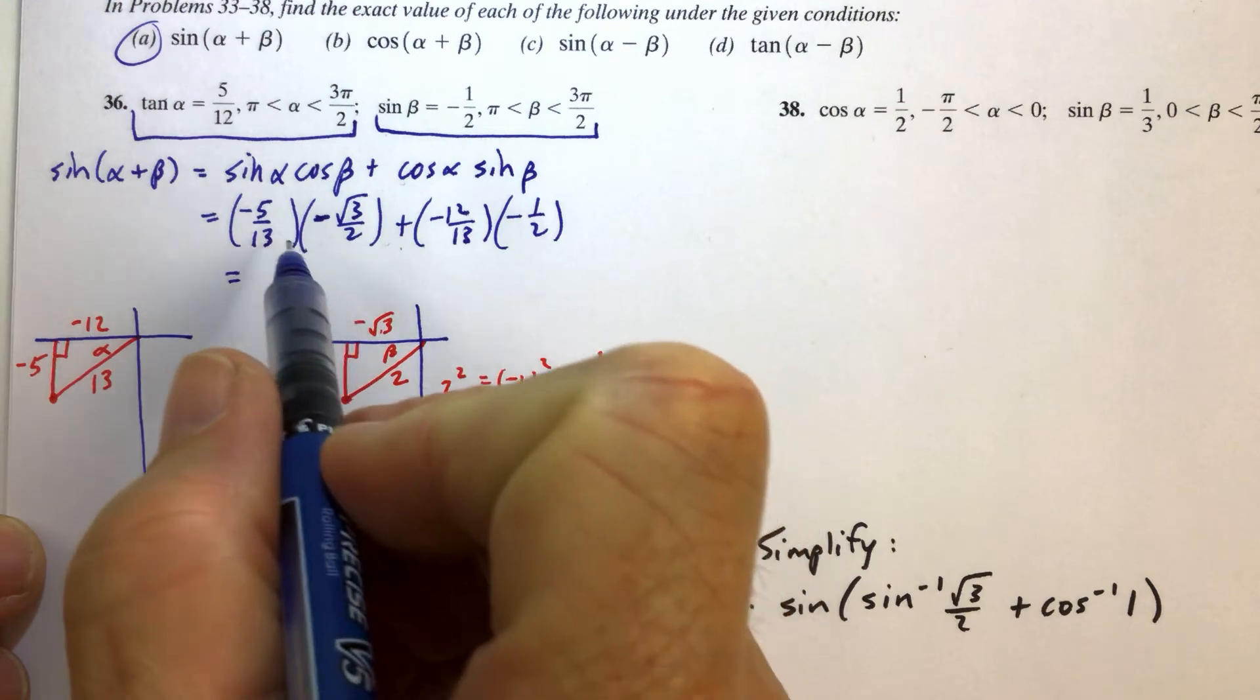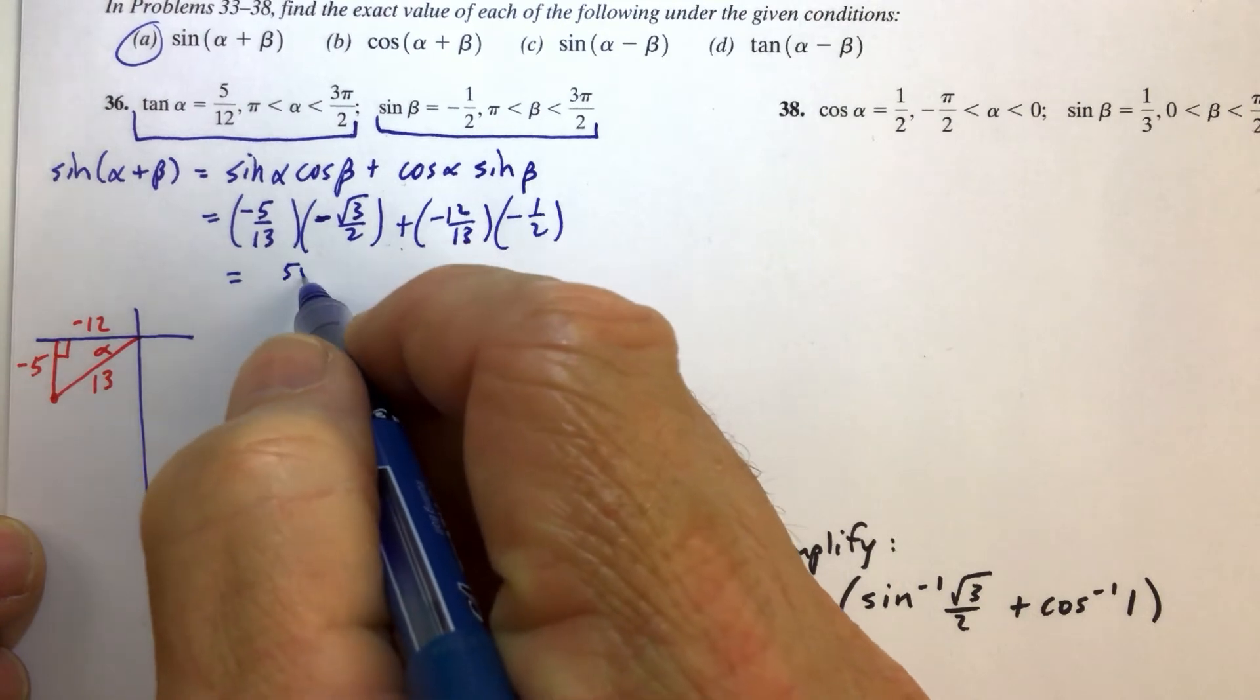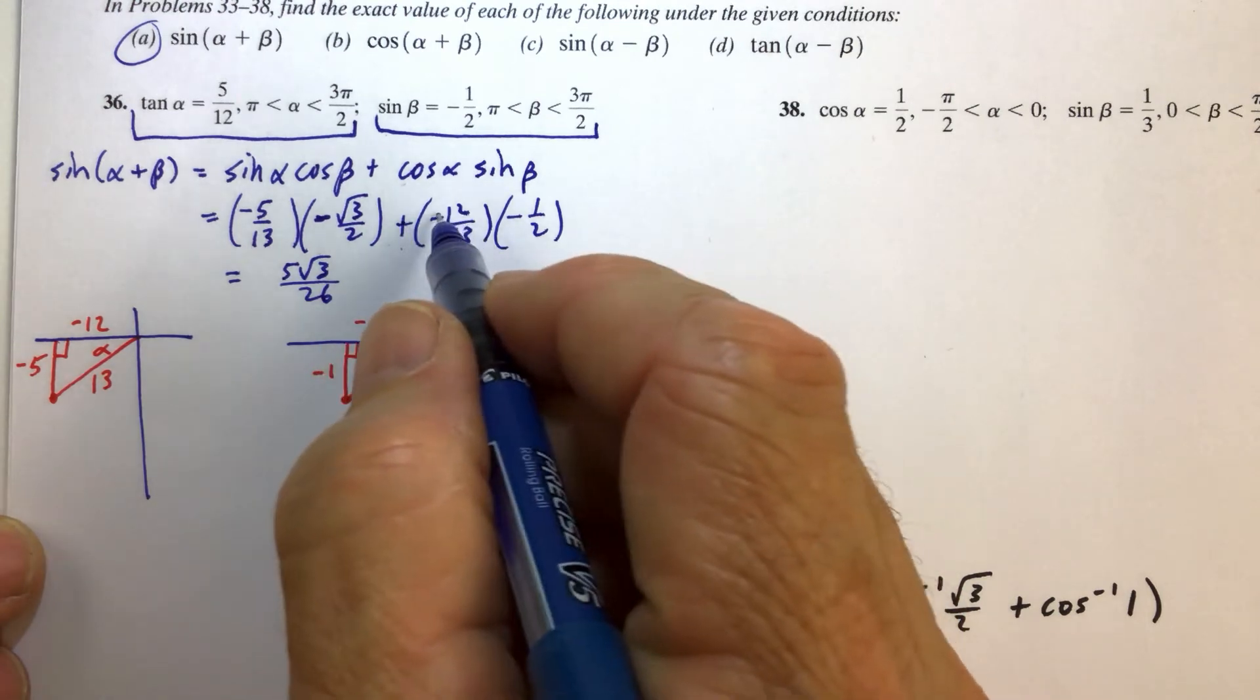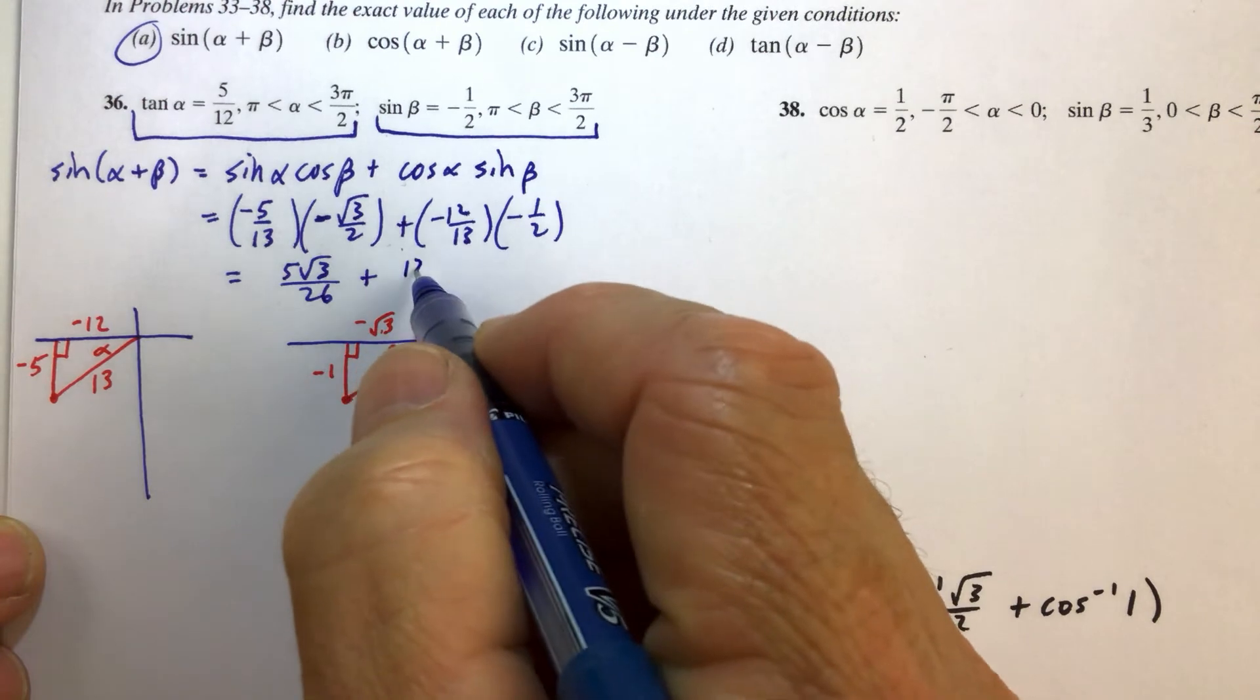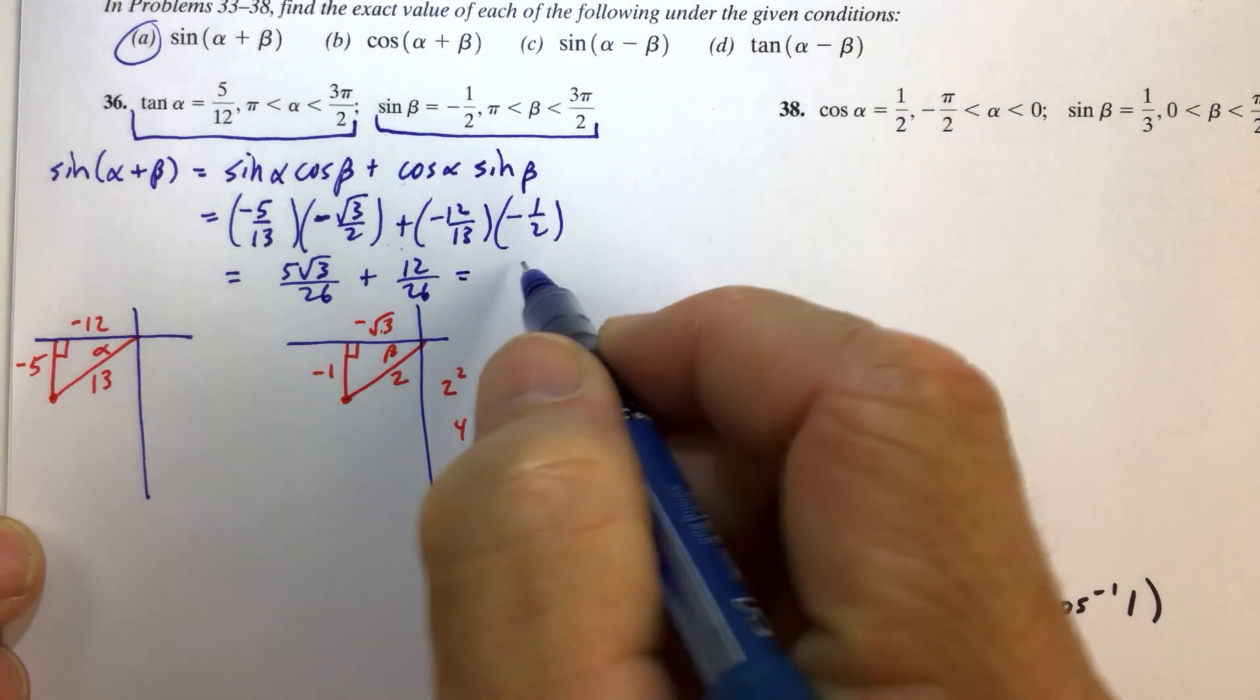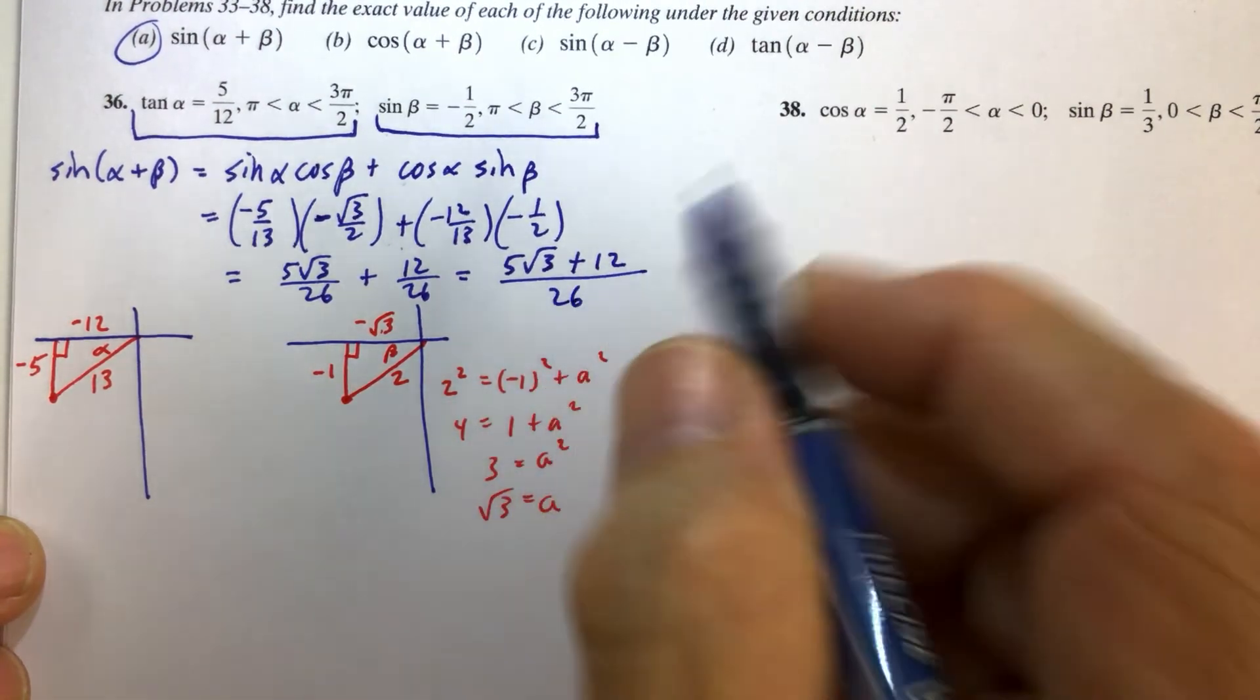Now, simplifying this expression, we have negative times a negative, that's a positive. 5 times radical 3 over 13 times 2 is 26. And then plus minus times minus, so it's plus. 12 times 1 is 12. Don't cancel the 2 and the 12 because we want a common denominator of 26. And when we combine both terms, we get 5 radical 3 plus 12 all over 26.